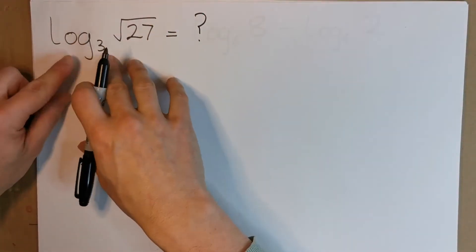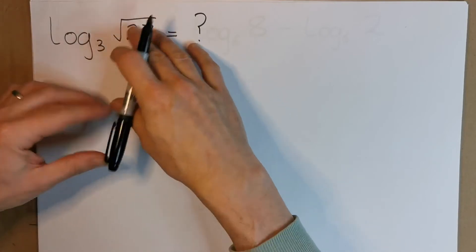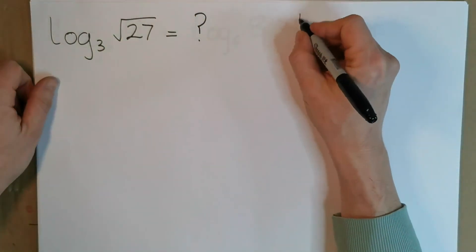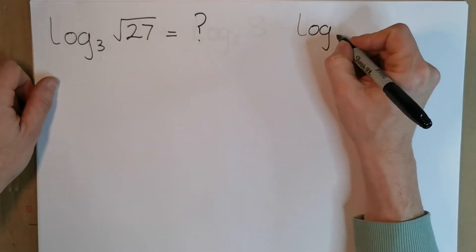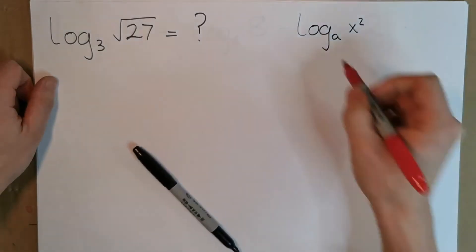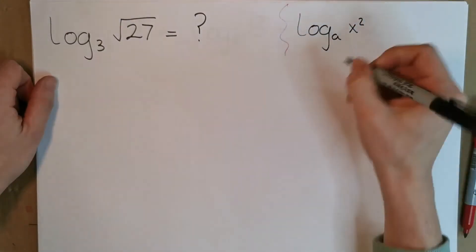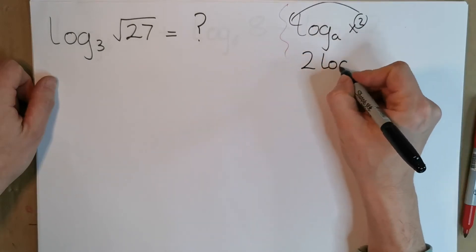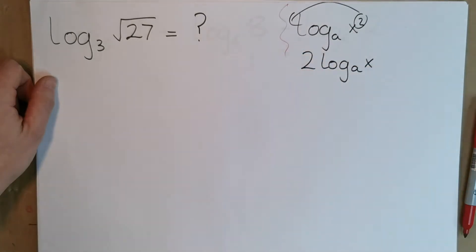When you see something like this, something squared or to a power, know that one of the rules in logs is something like this: if you have log to the base a of x squared, the rule tells you that you can actually bring this power down in front and you can say 2 log base a of x.